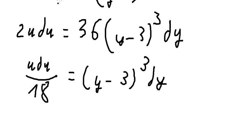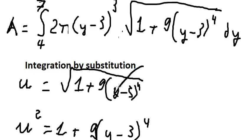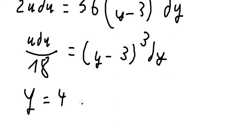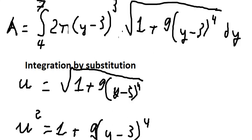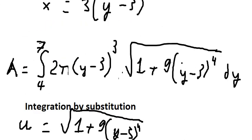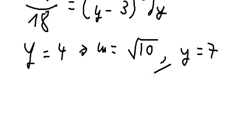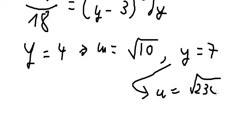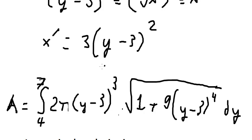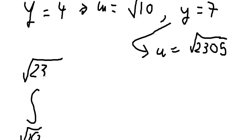Now we need to change the bounds. When y equals 4, we substitute 4 into the expression and find that u equals the square root of 10. When y equals 7, we substitute 7 and find that u equals the square root of 2305. So the new bounds are from the square root of 10 to the square root of 2305.